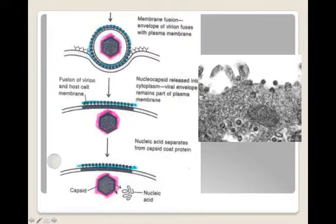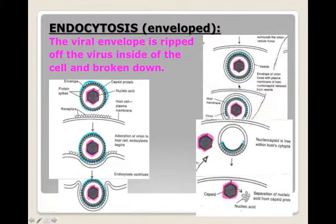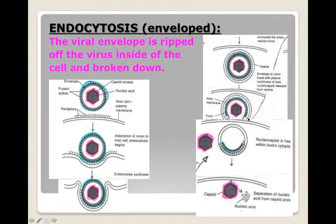After fusion, uncoating must occur — the nucleic acid has to come out of the capsid. The second way an enveloped virus can enter a cell is through endocytosis, a process from biology. Here, the virus attaches and induces the cell to take it in via a vacuole, so there's an extra layer of host cell membrane engulfing the viral envelope and nucleocapsid. Once the vacuole is inside, the host cell membrane rips off the envelope, exposing the nucleocapsid, and then uncoating occurs. With endocytosis, the viral envelope is removed inside the cell and broken down — it's not left on the cell surface.